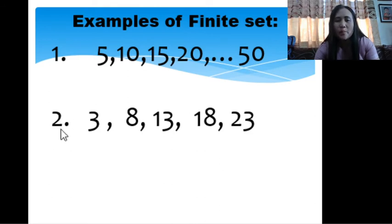For the second example, we have 3 as your first term, or we can denote as a sub 1. So a sub 1, then 8 is your a sub 2, and 13 is a sub 3, and so on. And your last term is 23, which is also 1, 2, 3, 4, 5. So we have 5 terms. Remember, for a finite set or finite sequence, we can identify your first term, your last term, and of course, how many terms do we have. We can count the number of terms in a finite sequence.